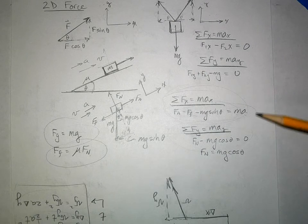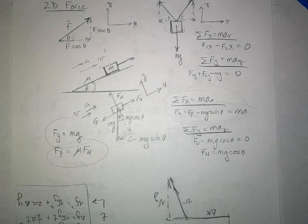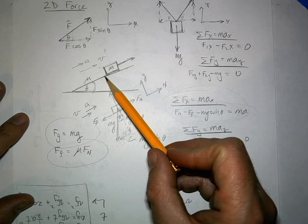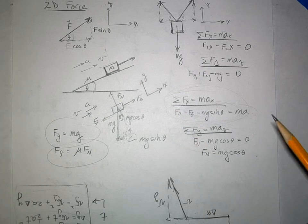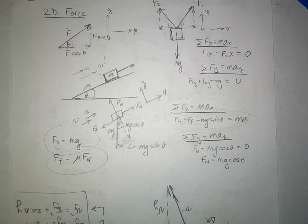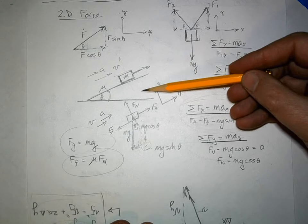Solve the equations for whatever unknown is given. Be careful — the crate might be moving down the incline, in which case friction reverses direction. It might be moving at constant velocity or accelerating down. There's a wide variety of incline plane problems. There is a hanging mass problem and an incline plane problem on the test.